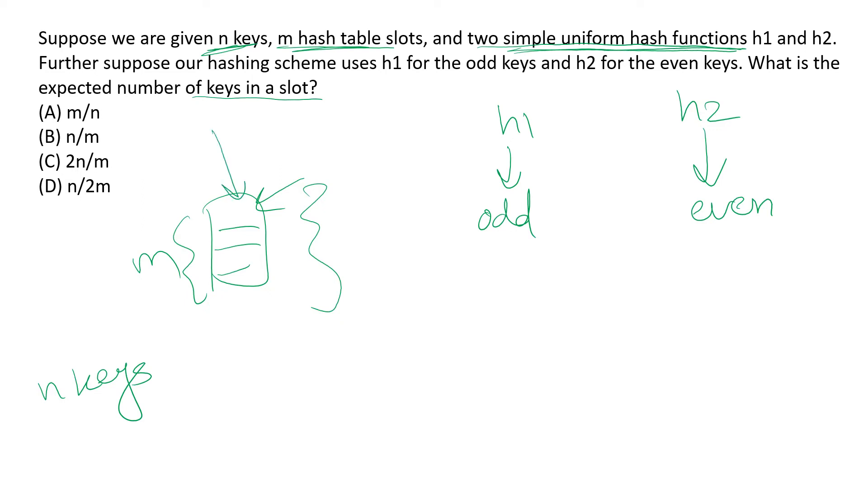Or we can put it as any of these m slots is equally likely to be substituted by any of these n keys, because we are not using any hashing techniques such as open addressing, chaining, or quadratic probing. It is a simple uniform hash function, so every key will have an equal probability of landing into any of these m slots.